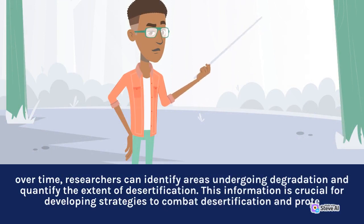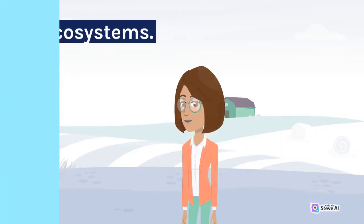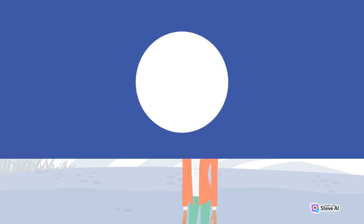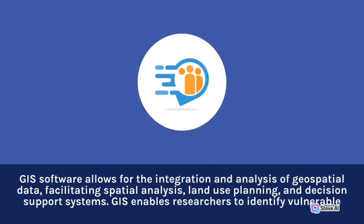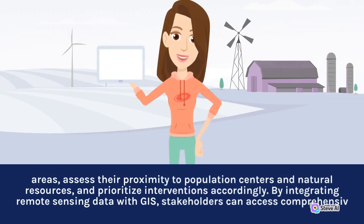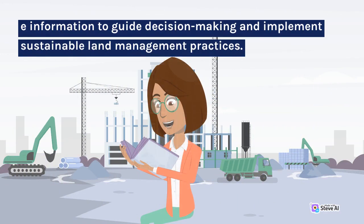This information is crucial for developing strategies to combat desertification and protect ecosystems. GIS software allows for the integration and analysis of geospatial data, facilitating spatial analysis, land use planning, and decision support systems. GIS enables researchers to identify vulnerable areas, assess their proximity to population centers and natural resources, and prioritize interventions accordingly. By integrating remote sensing data with GIS, stakeholders can access comprehensive information to guide decision-making and implement sustainable land management practices.